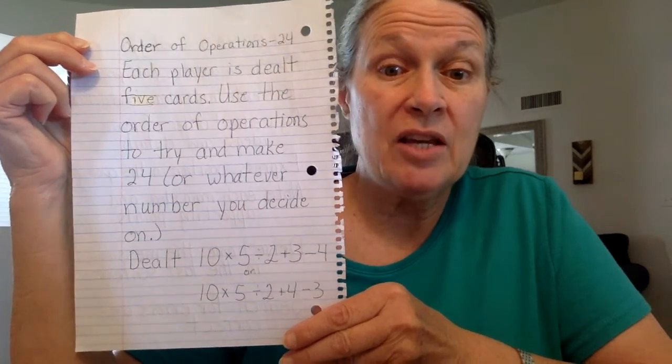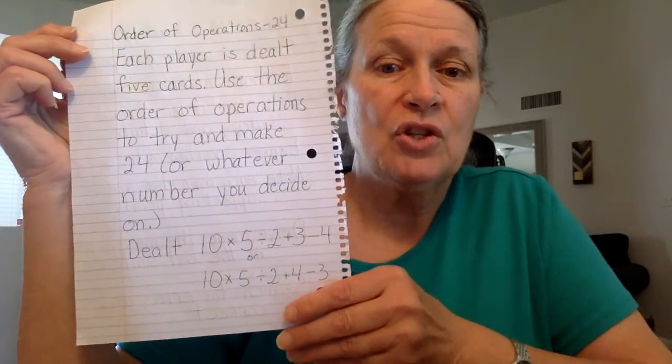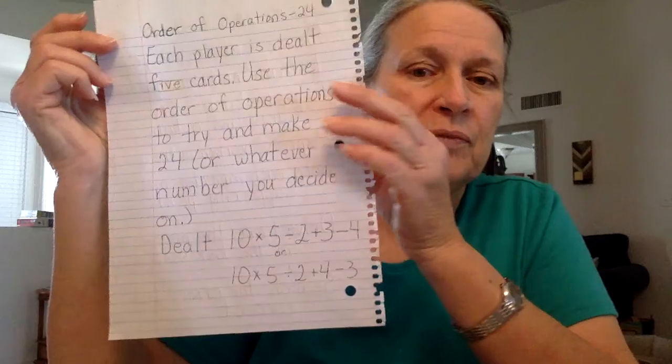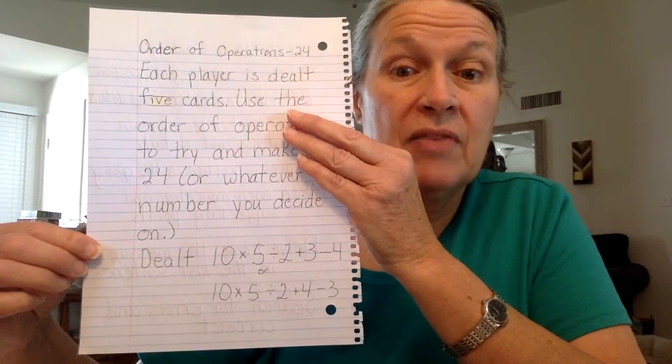Let's say you're dealt a 10, 5, 2, 3, and 4. If I had these cards, I would multiply 5 and 10, which gives me 50, then divide by 2 to get 25.